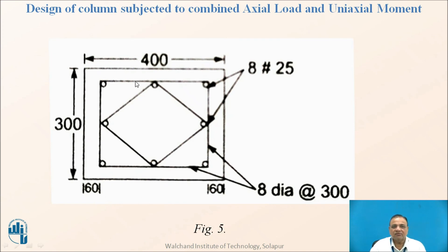They are provided as shown in figure 5. This is figure 5. Here you will find 300 by 400 and here 8 bars are there: 3 at top, 3 at bottom and 2 at middle. Likewise the lateral ties are provided with 8 mm diameter 300.